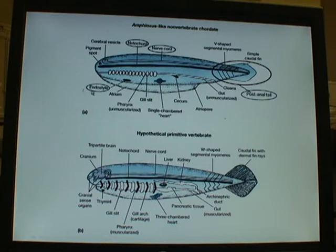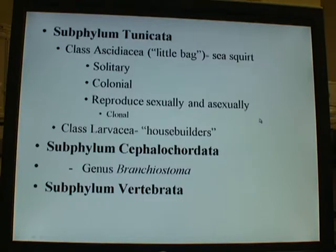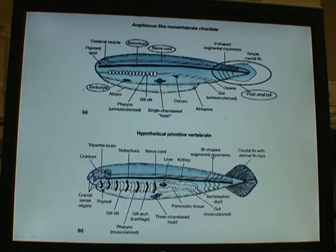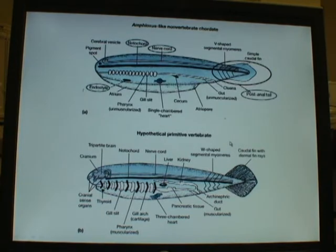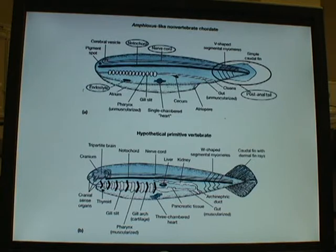Amphioxus has an endostyle, a notochord, a nerve cord, and a post-anal tail. These general features are also found in other invertebrate chordates and in all vertebrates. You can look to your textbook to see how the hypothetical primitive vertebrate shares these traits as well. You'll learn about these traits in their regular and derived forms throughout this course.